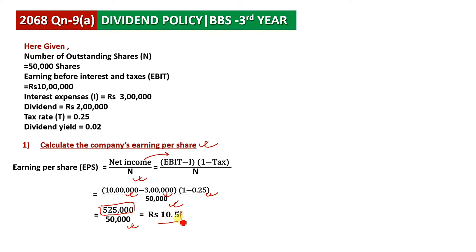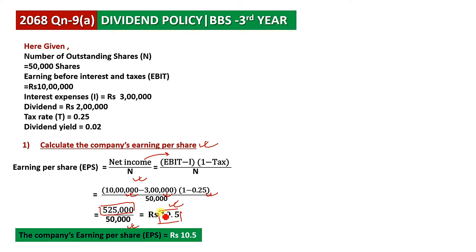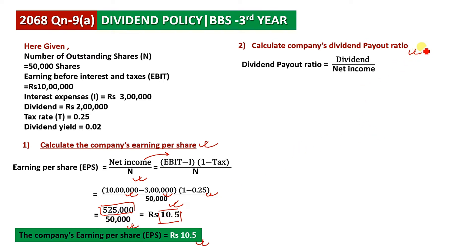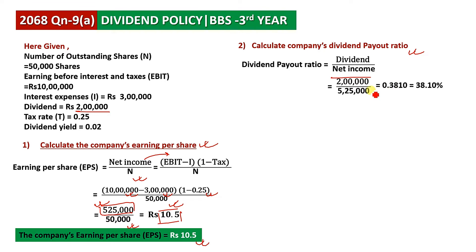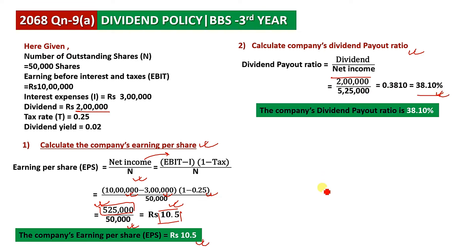Therefore, the company's earnings per share is equal to 10.5 rupees. The dividend payout ratio equals dividends divided by net income. Net income is 5,25,000 and dividend is given from the question. Therefore, the company's dividend payout ratio is 38.10%.